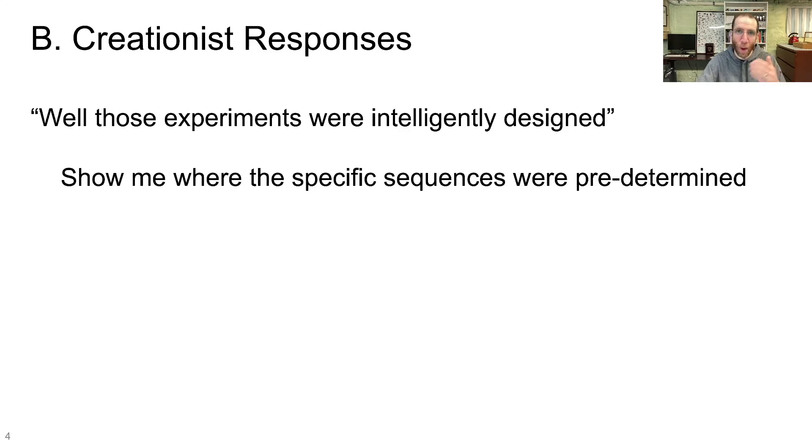So, creationists, show me. You have the methods. I link the experiments down below. Go through the methods and show me where those sequences, the specific sequences that they found with biochemical activity, show me in those methods where those sequences are predetermined. That's what you need to do in order for this supposed rebuttal to make sense. But you can't do that because the sequences were not predetermined. They were the result of undirected processes.